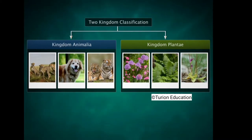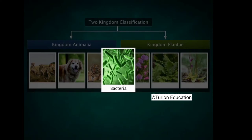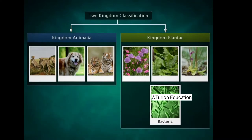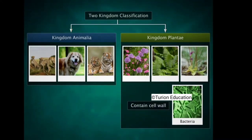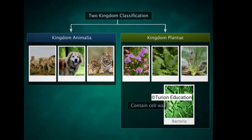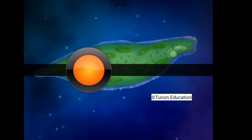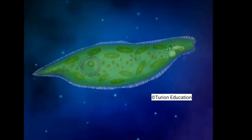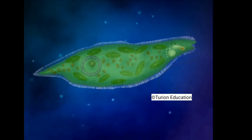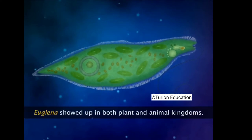However, if all organisms were classified as either plants or animals, where would lower living forms such as bacteria be placed? Scientists placed bacteria in Kingdom Plantae because they contained rigid cell walls. However, bacteria were prokaryotes whereas all plants were eukaryotes.